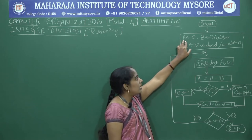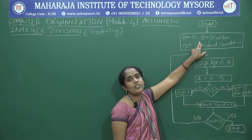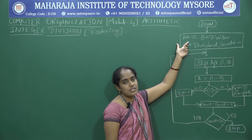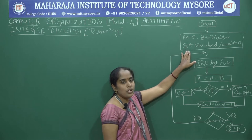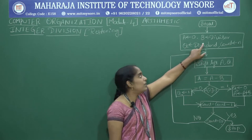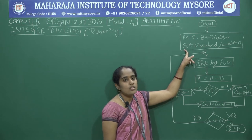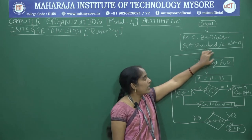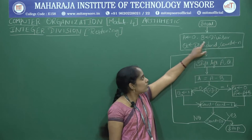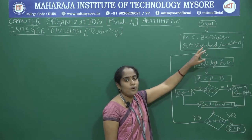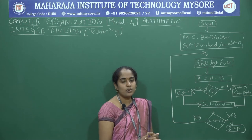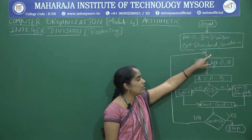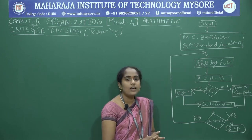That means A gets N+1 zeros. Q is the dividend value. B depends on the Q value — if Q contains 4 bits, then B should also contain 4 bits. The count value depends on the dividend or divisor value. If both values contain 4 bits, count equals 4. If both contain 5 bits, count equals 5.